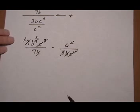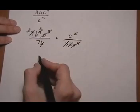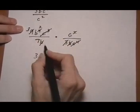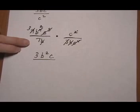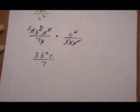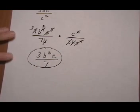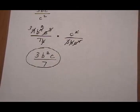And once we've done all the canceling, we look to see what's left. We have 3b squared c over just a 7. And that's the answer there. That was number 4. Let's take a look at number 6.